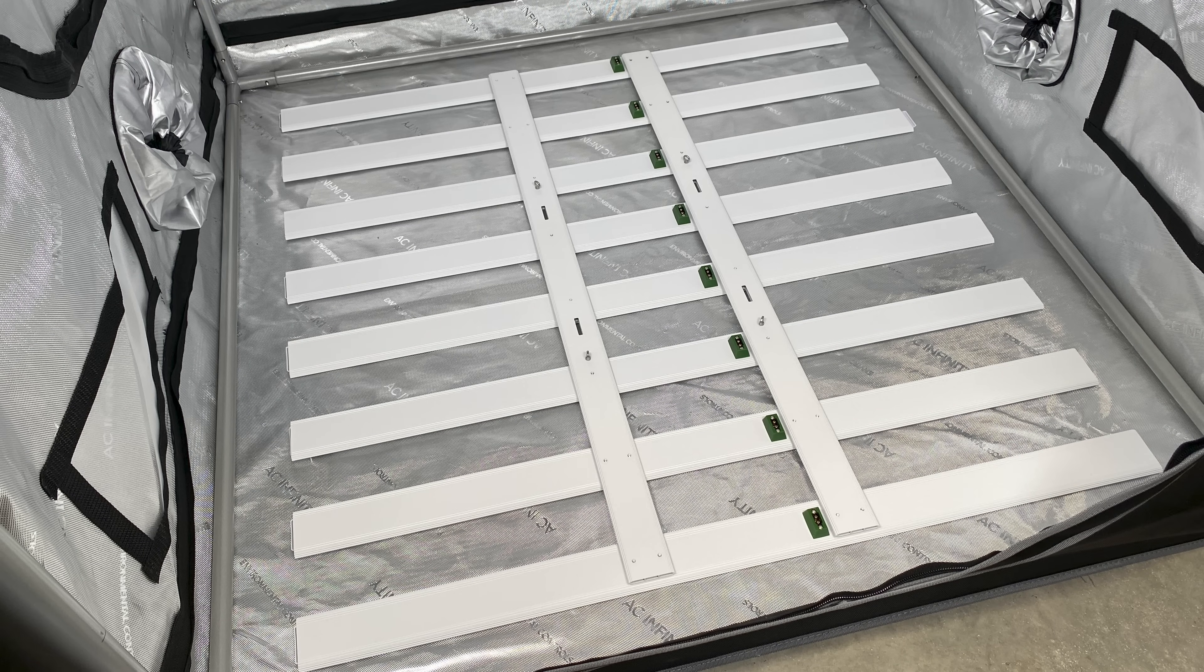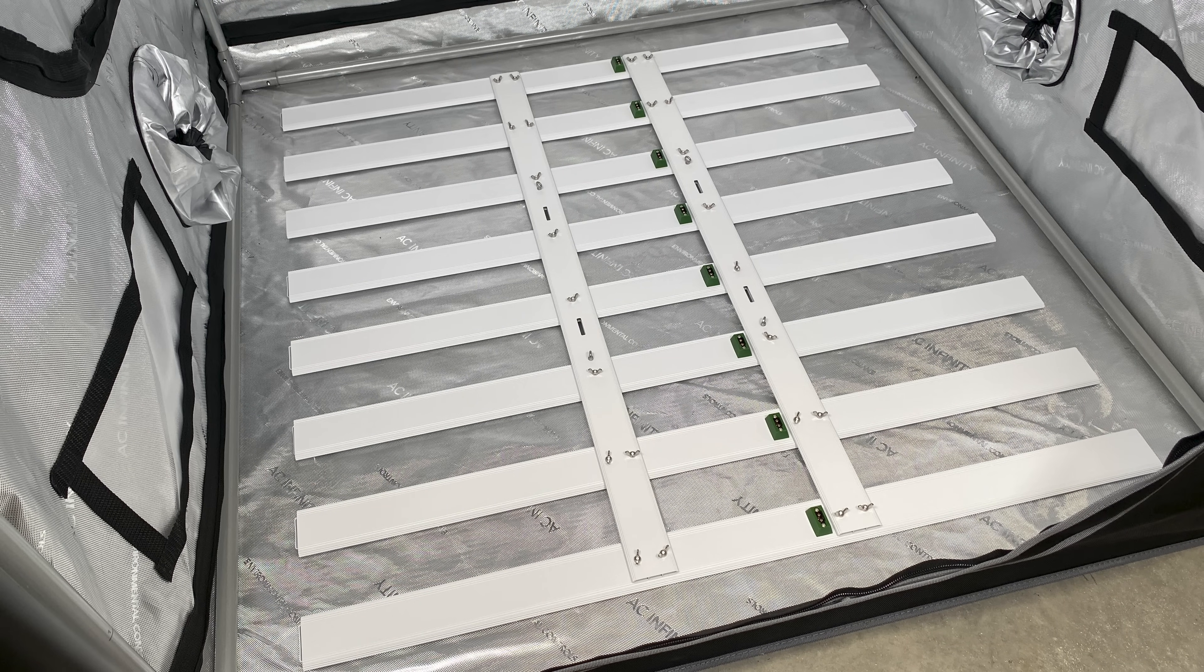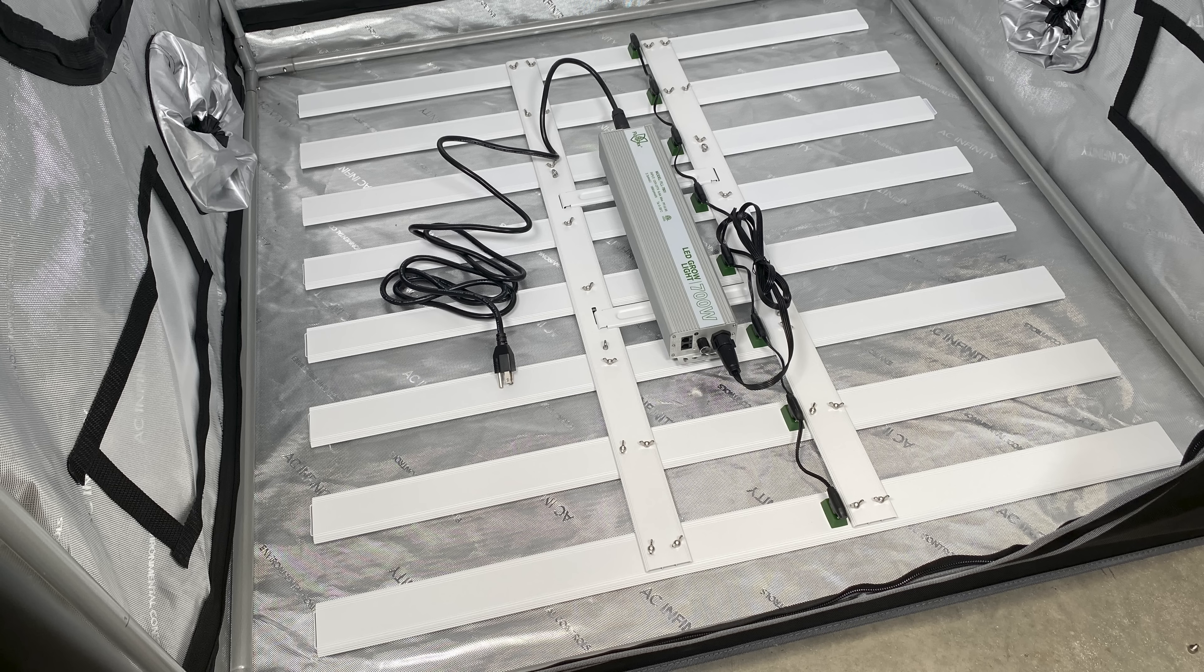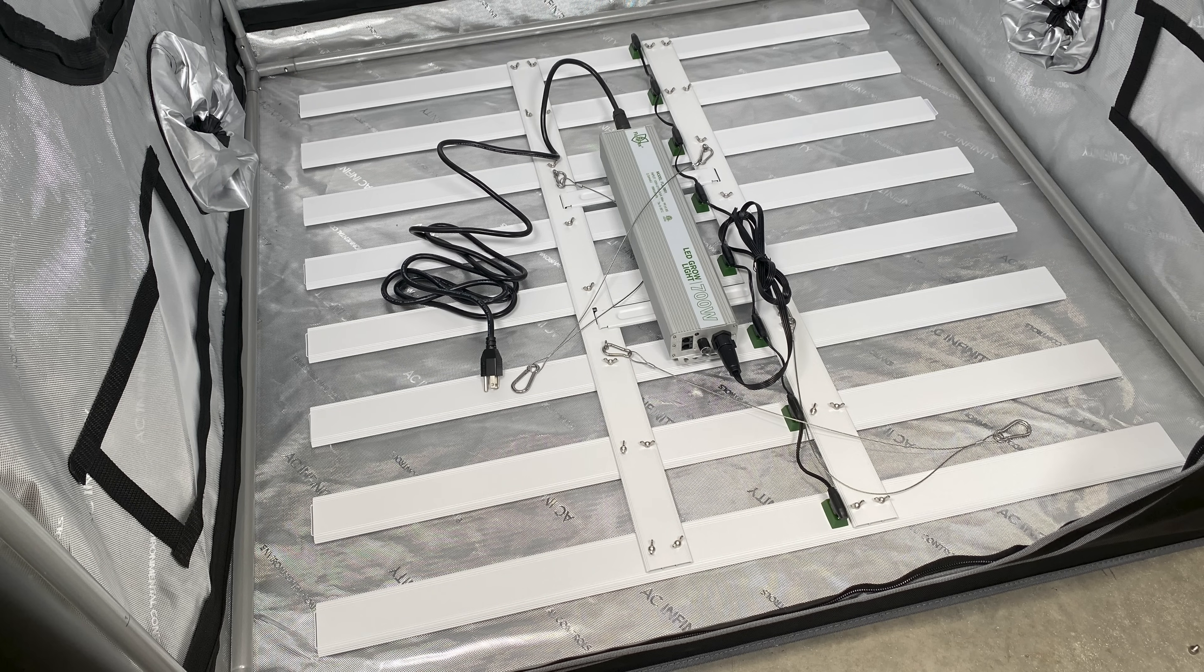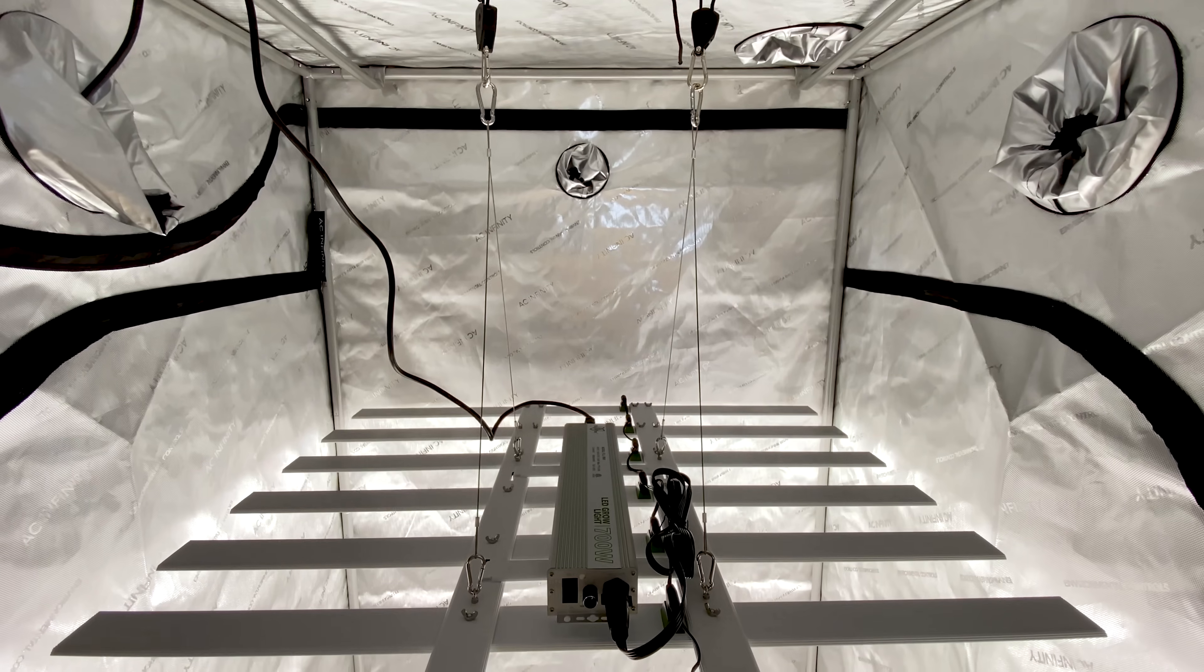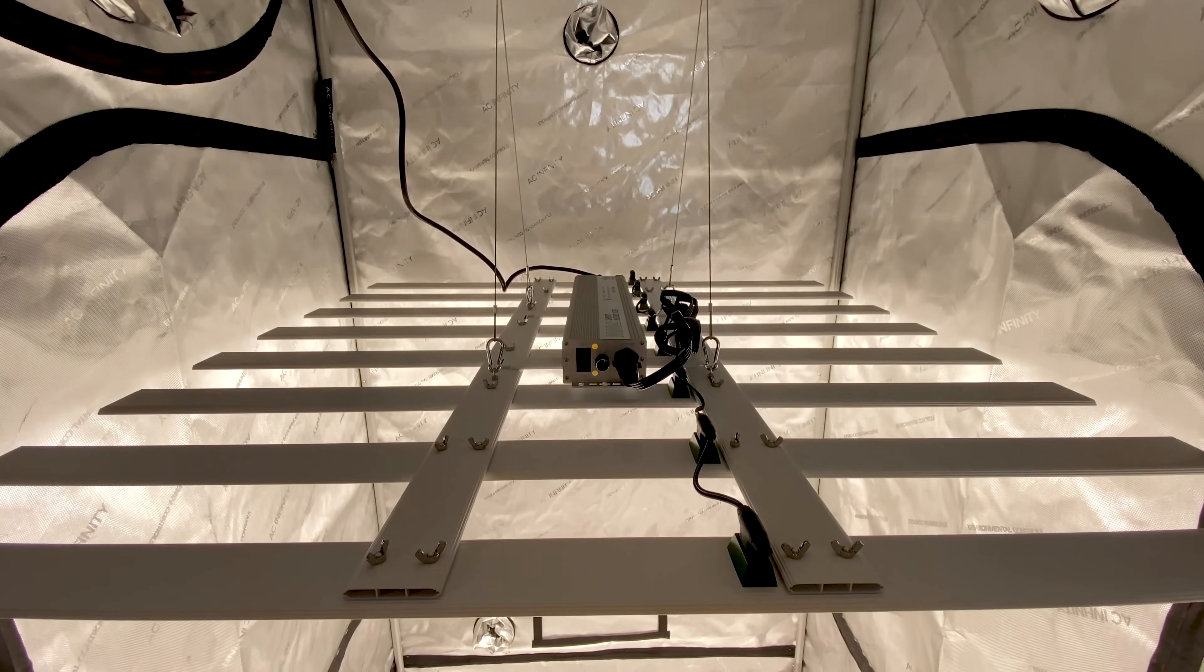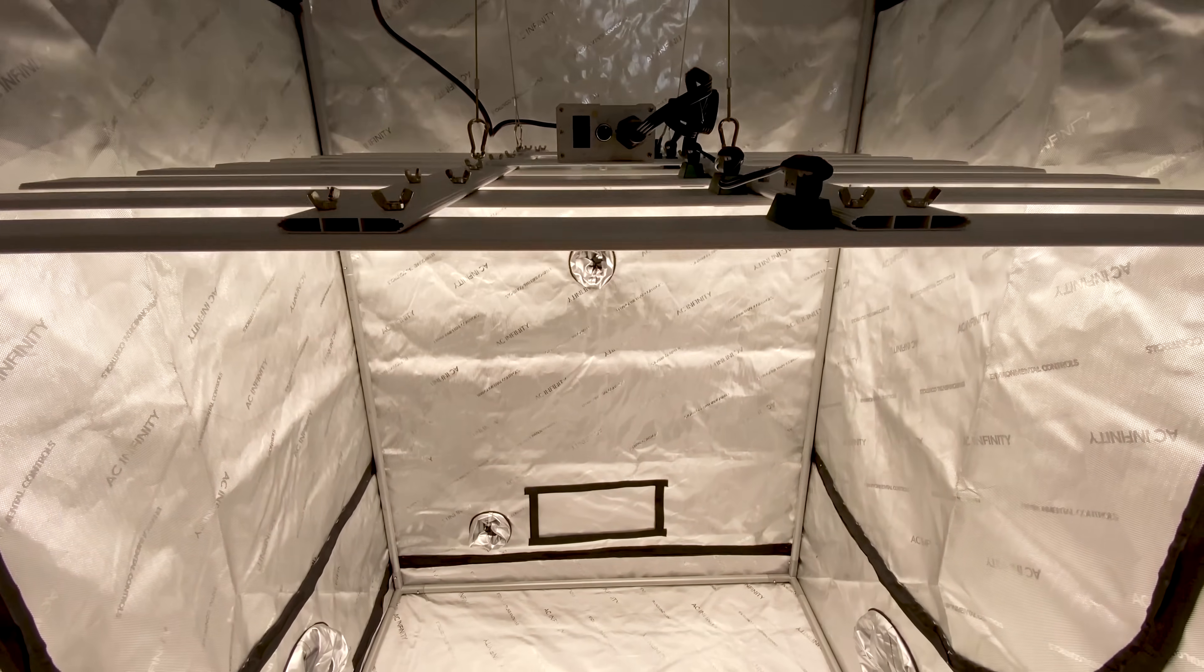No tools are required for assembly and it can be put together in just a few minutes according to FloraFlex, although it took me about 10 minutes. The assembly process is straightforward. If you want a step by step guide, check out the link in the description to watch the assembly video. Once assembled, you can use the included wire hanging hardware to hang the light. However, the light doesn't come with ratchet hangers so you'll need to purchase those separately.